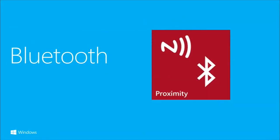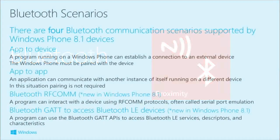Like I said, short and sweet. I'm not going to do a demo on that because I really want to get into the more interesting stuff, which is Bluetooth and NFC. So we've got four Bluetooth scenarios, four ways that you can use Bluetooth in a Windows Phone device or Windows device. First of all, we've got this app-to-device thing. Here we've got an external device, some kind of Bluetooth device that has been paired with your phone, and the program can enumerate the paired devices and establish a connection to it.